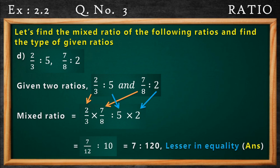So we are multiplying the antecedents and consequents. If you observe the left side, there is one chance of reducing the expression. We can divide 8 by 2, so 2 into 1 will become 2 and 4 will become 8. Now if you multiply, 1 into 7 will become 7 and 3 into 4 will become 12, and 5 into 2 is 10. So the new ratio is 7/12 is to 10.